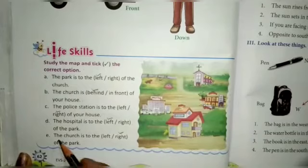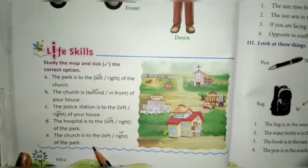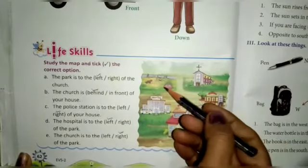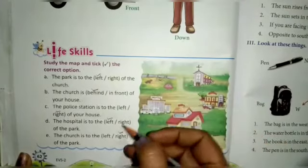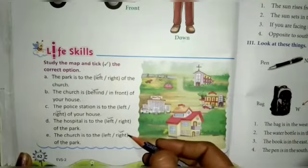Next — the church is to the left or right of the park. This is the church. This is the park. So the church is on the right side of the park.